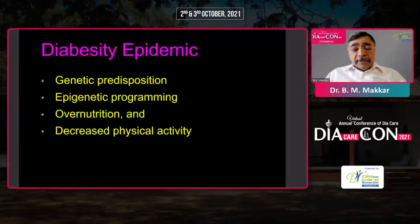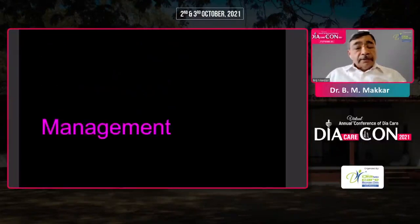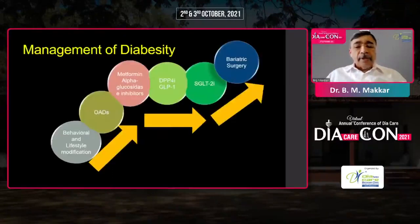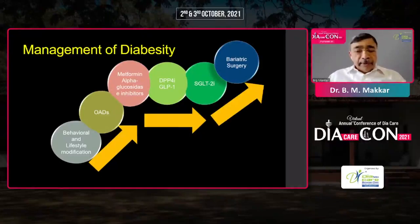The diabetes epidemic is basically caused by genetic predisposition, epigenetic programming, overnutrition, decreased physical activity — all playing a very complex role in the causation of obesity and diabetes, leading to the increasing prevalence of this twin epidemic. The principles of management of diabesity remain the same as they are for management of diabetes.